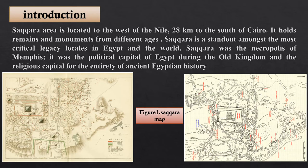Introduction. Saqqara is located to the west of Memphis, 28 km to the south of Cairo. It holds remains and monuments from different ages. Saqqara stands out amongst the most critical heritage sites in Egypt and the world. Saqqara was the necropolis of Memphis. It was the political capital of Egypt during the Old Kingdom, and the religious capital throughout ancient Egyptian history.